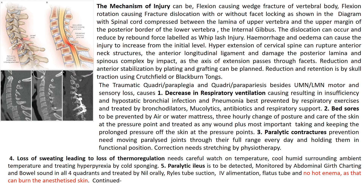The mechanism of injury can be flexion, which causes wedge fracture of the vertebral body in the thoracic or lumbar vertebrae, or sometimes a burst fracture. It can also be flexion-rotation, especially in the cervical spine, which causes fracture-dislocation with or without facet locking, as shown in the diagram.